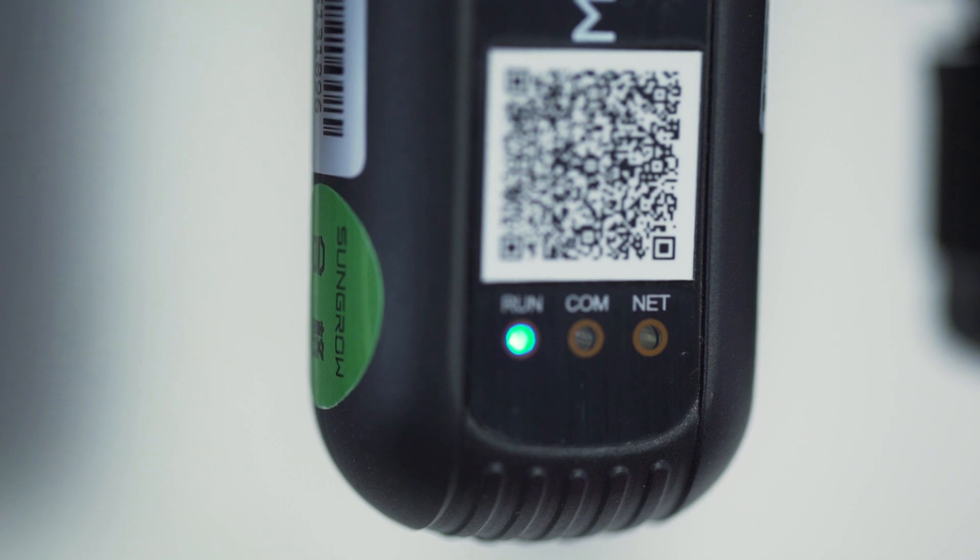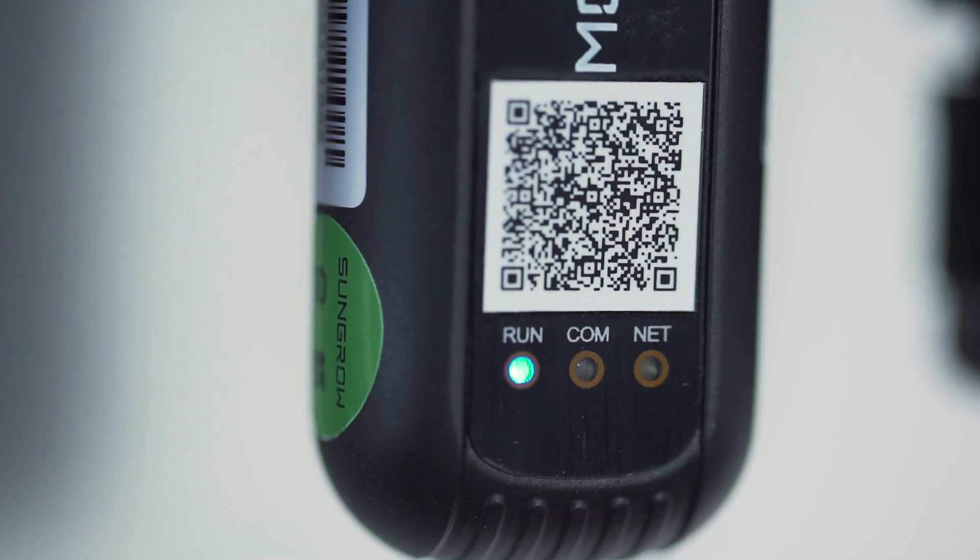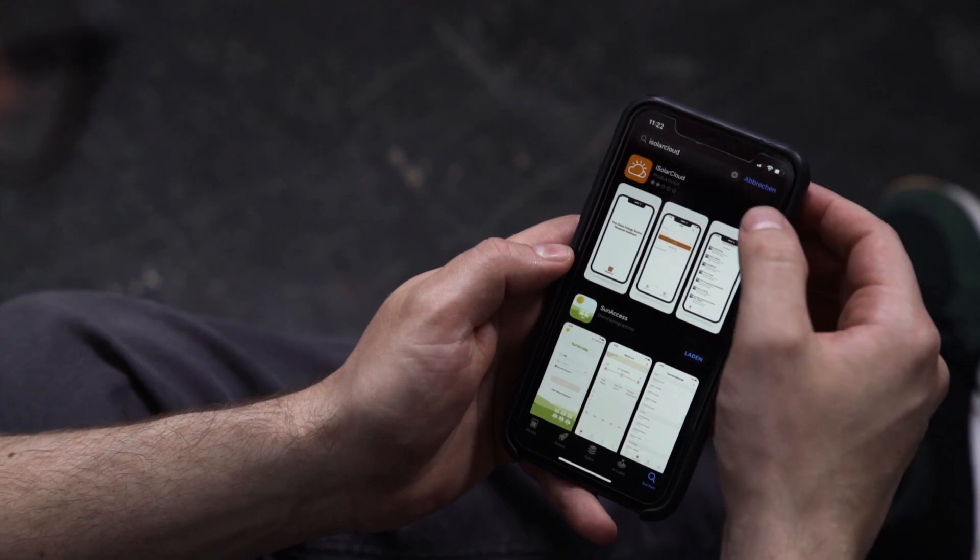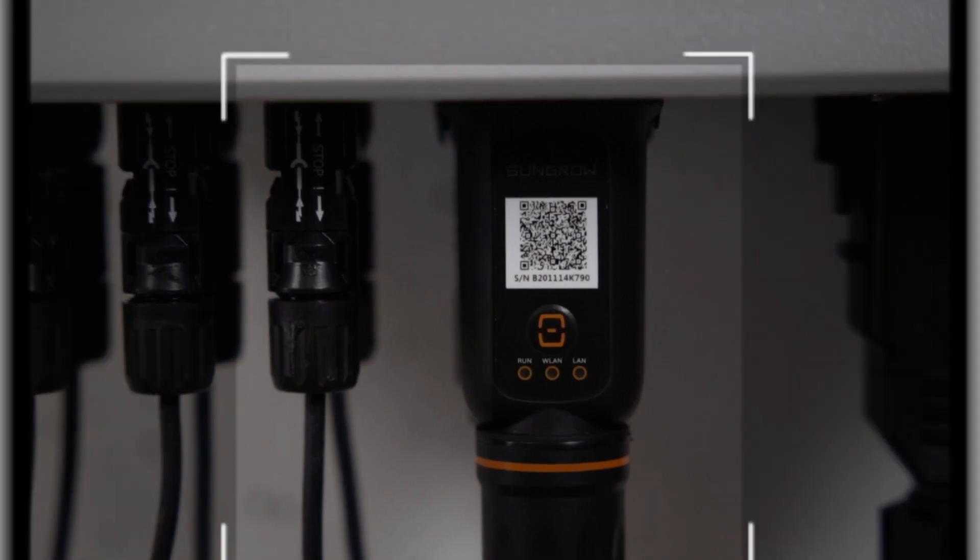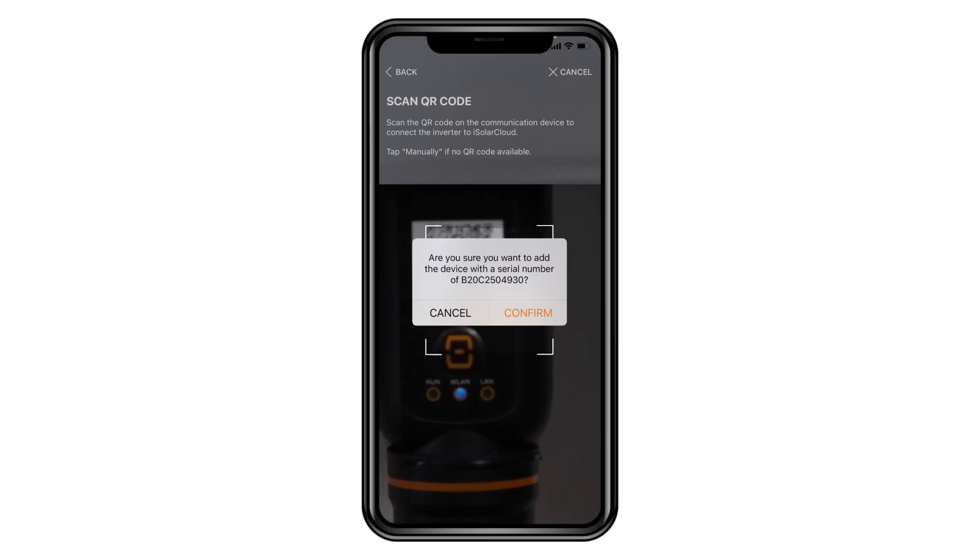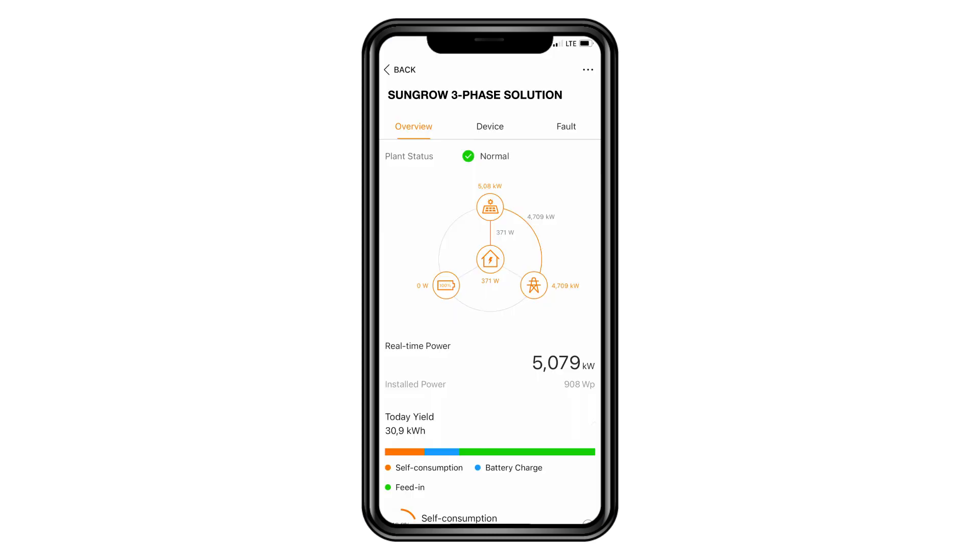If this is not the case, please refer to the manual where you will find a breakdown of the different light signals. When connected, the Wi-Fi module takes about 10 minutes to fully boot. To finalize the setup, you need to download the iSolarCloud app. You may find a detailed commissioning video on our YouTube channel.